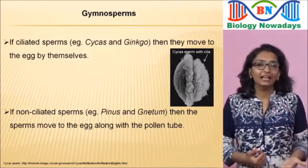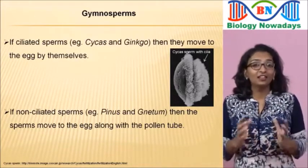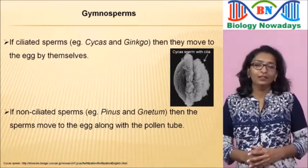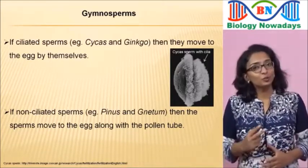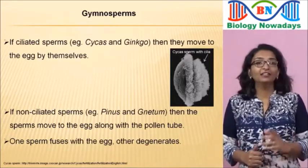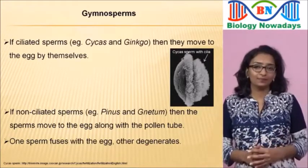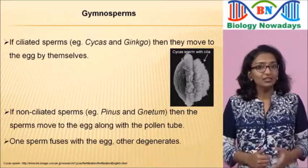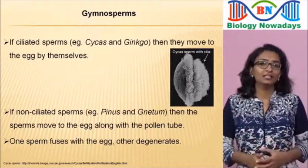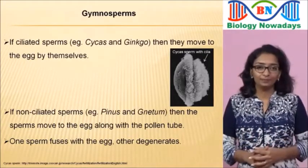The sperms and eggs of Cycas are the largest in the plant kingdom. Out of the two sperms, one fuses with the egg and the other sperm degenerates. In the same way, sperms from different pollen grains will fertilize the eggs in each archegonium.